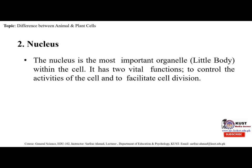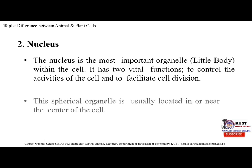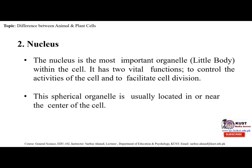The nuclear membrane is perforated with holes called nucleopores that allow proteins and nucleic acids to pass through. The spherical organelle is usually located in or near the center of the cell. Animal cells contain three regions: plasma membrane, nucleus, and cytoplasm. The nucleus is the cell's central organelle, which contains the cell's DNA.